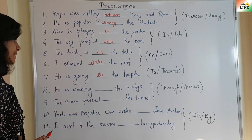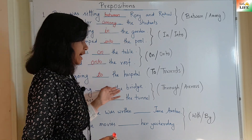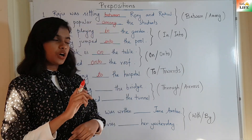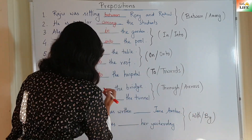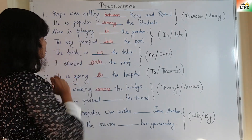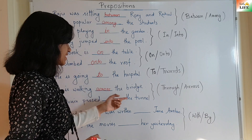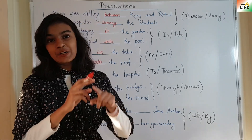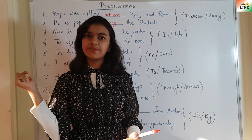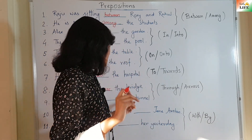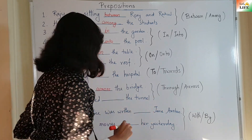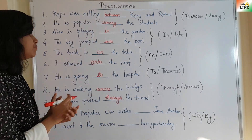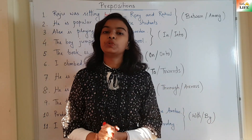Now let's take a look at the sentences. He is walking — the bridge. The bridge is a surface, so he is walking across the bridge. The train passed — the tunnel. The tunnel is a closed space, so the train passed through the tunnel. This is the basic difference between 'through' and 'across'.